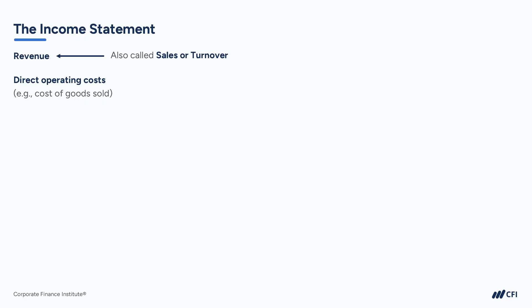After deducting our direct operating expenses from revenues, we arrive at our first subtotal on the income statement, and we call this gross profit. Gross profit is simply revenue minus direct operating expenses.